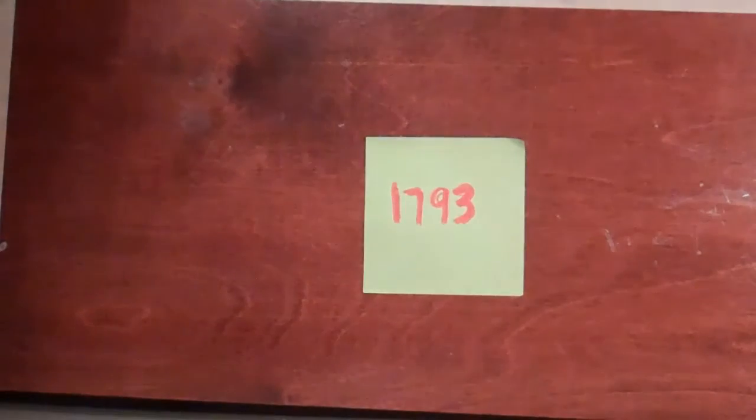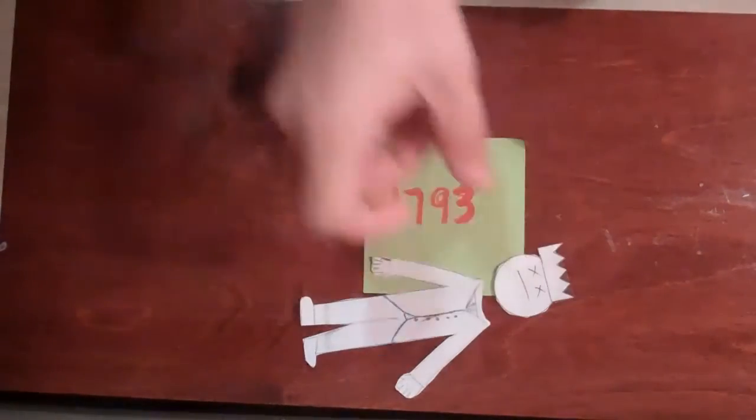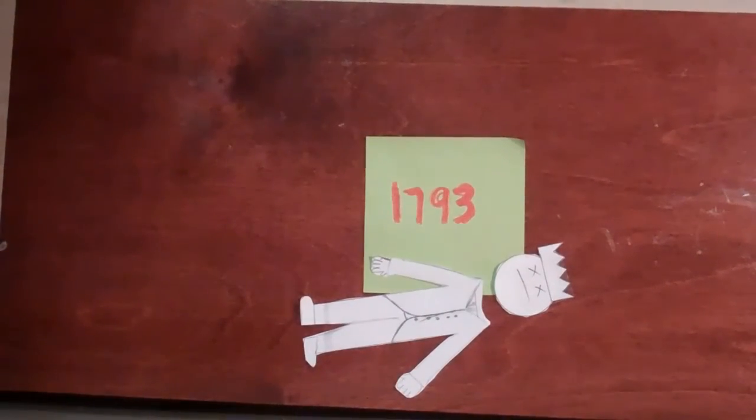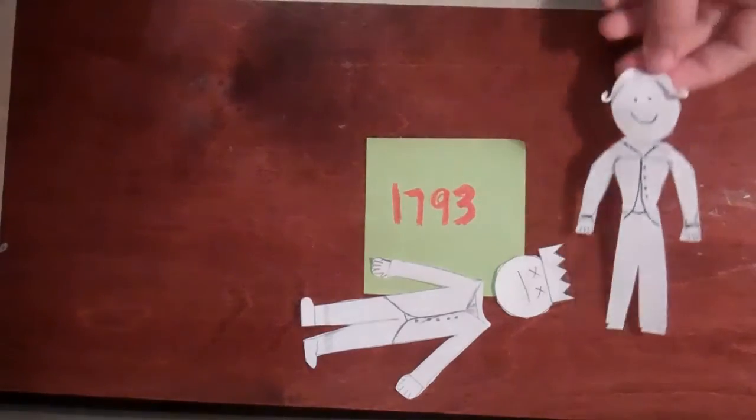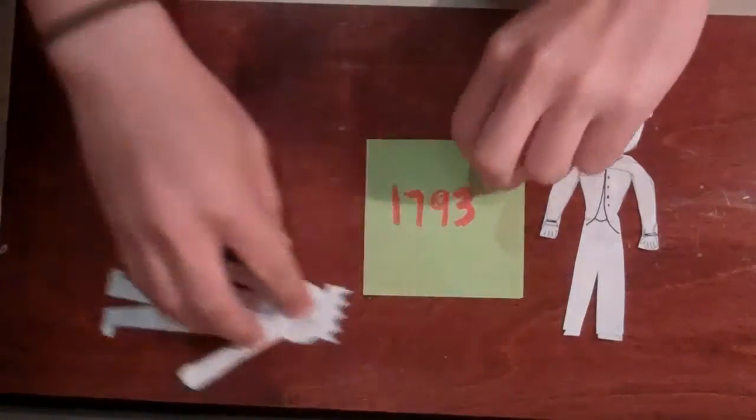In 1793, Louis XVI was executed as a result of the overthrow of the French monarch. After this, Maximilien Robespierre came to power in the new government of France.